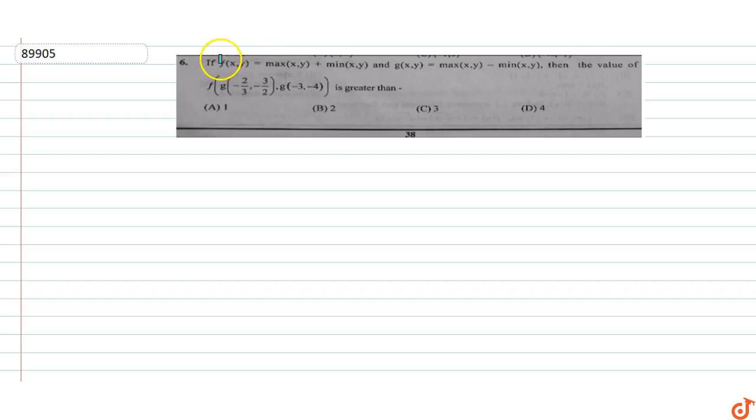The question given is: if f of x,y is equal to maximum of x,y plus minimum of x,y, and g of x,y is equal to maximum of x,y minus minimum of x,y, then we have to find the value of f of g of minus 2 by 3, minus 3 by 2, and g of minus 3, minus 4.